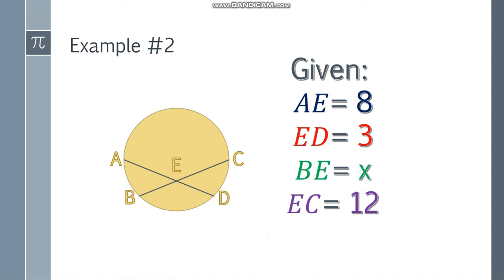Example number 2. You have the given AE is equal to 8, this is 8, ED is 3, BE is X, and EC is 12. So we don't know the value of BE. So same thing, write the formula: AE times ED is equal to BE times EC.